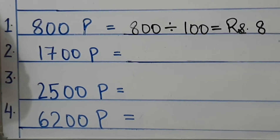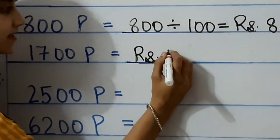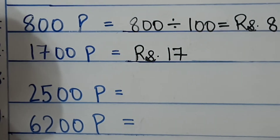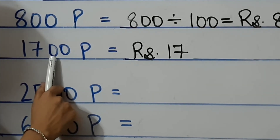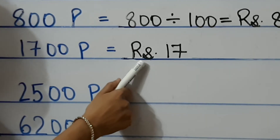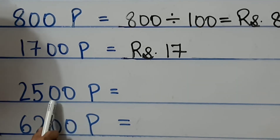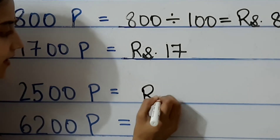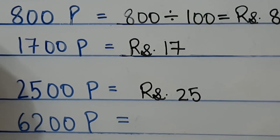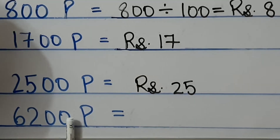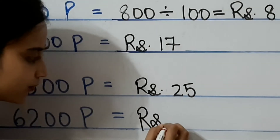Next, 1700 paise. Here also we convert it into rupees — rupees 17. What you can do is divide it by 100, or you just remove the last 2 digits. Next, 2500 paise — you remove the last 2 digits, giving rupees 25. Next, 6200 paise — remove the last 2 digits and your answer is rupees 62.